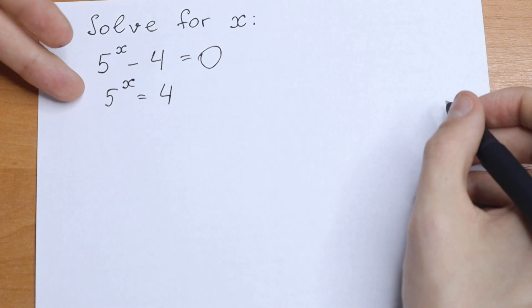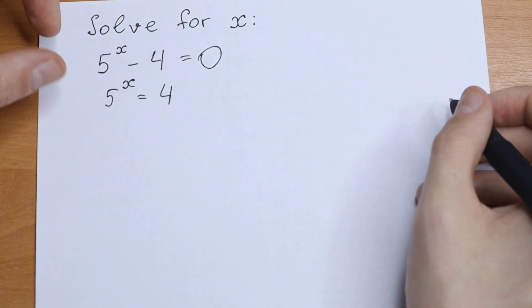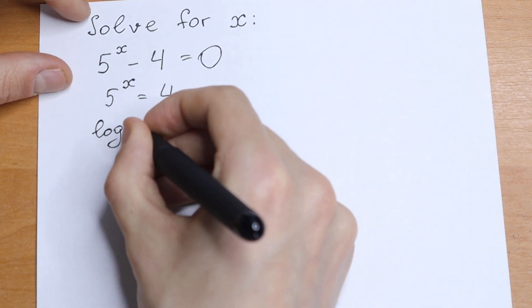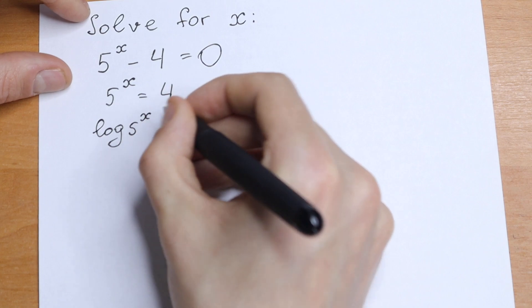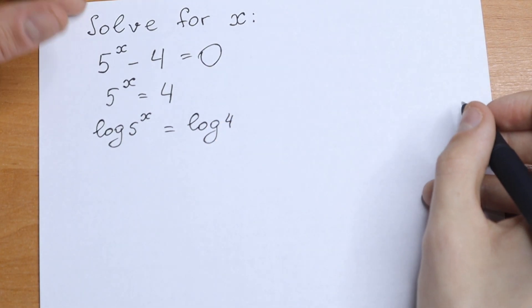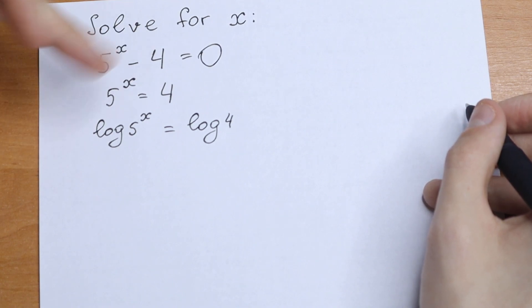And take a look, this is our logarithm definition. If we take log from both of the sides, what will we have? We will have log 5 to the power x and on the right we will have log 4. So this is our log definition.